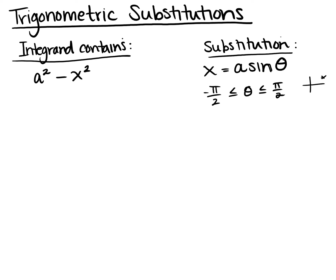Thinking of that in quadrants — quadrants one and four — from negative π/2 through π/2. That range gives us a quadrant where sine is positive and one where it's negative, so we can get all values of sine. So for a number minus x squared, our substitution is x equals a·sinθ, valid for |x| ≤ a to keep the expression under the square root positive. You could use cosine also, but we use sine to avoid sign complications.